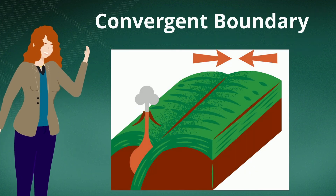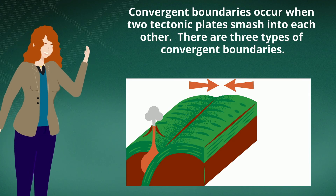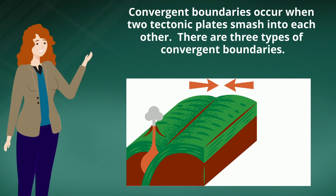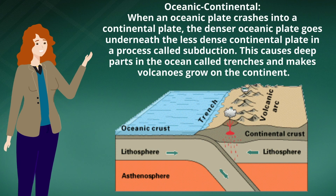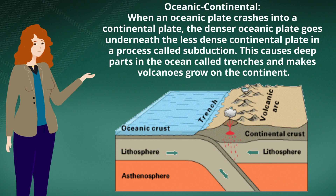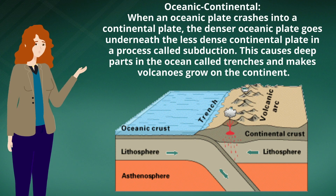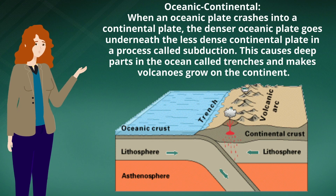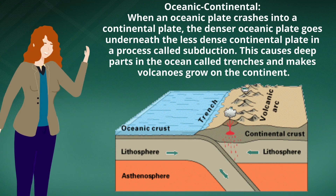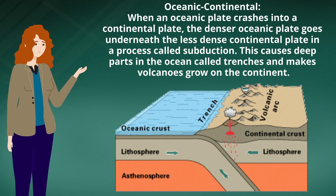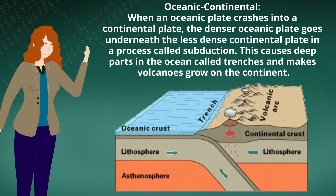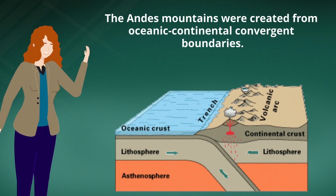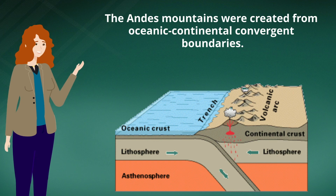Convergent boundaries occur when two tectonic plates smash into each other. There are three types of convergent boundaries. When an oceanic plate crashes into a continental plate, the denser oceanic plate goes underneath the less dense continental plate in a process called subduction. This causes deep parts in the ocean called trenches and makes volcanoes grow on the continent. The Andes Mountains were created from oceanic-continental convergent boundaries.